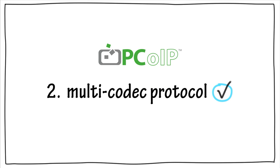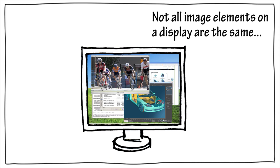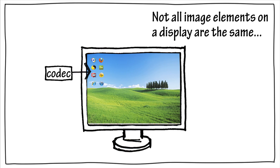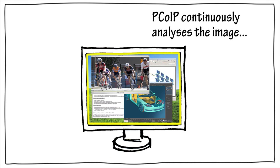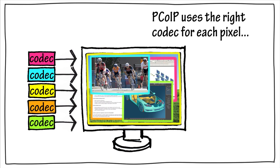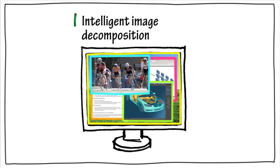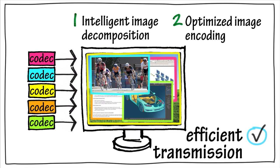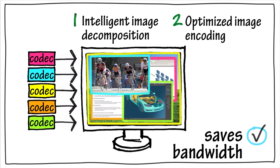Secondly, the PCoIP protocol is uniquely a multi-codec protocol. Because not all image elements on a PC display are of the same type, it makes no sense to use the same codec for everything — that would use excessive network bandwidth and give a lesser user experience. Instead, PCoIP continuously analyzes and decomposes image elements — graphics, text, icons, photographs, videos, etc. — and compresses them with the right codec for the right pixels. Intelligent image decomposition and optimized image encoding using multiple codecs enables efficient transmission and decoding, and saves your bandwidth while delivering the best user experience.